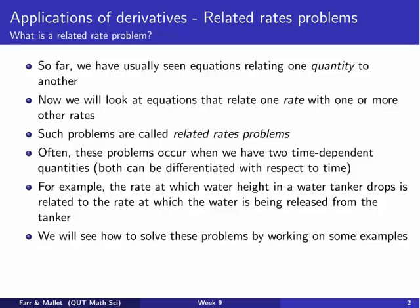Often we call these problems related rates problems. And generally, or a lot of the time with the types that we'll be looking at, they involve time-dependent quantities, although other possibilities exist as well. So for example, we might look at the rate at which the water height in a water tanker drops being related to the rate at which the water is released from the tanker itself. So we can see how we can solve these problems, and we're going to do that by working on a couple of examples.